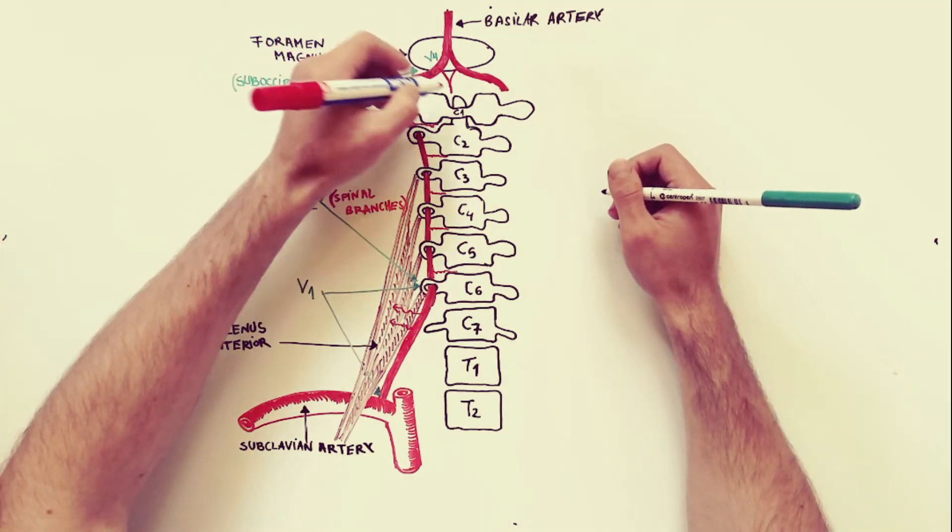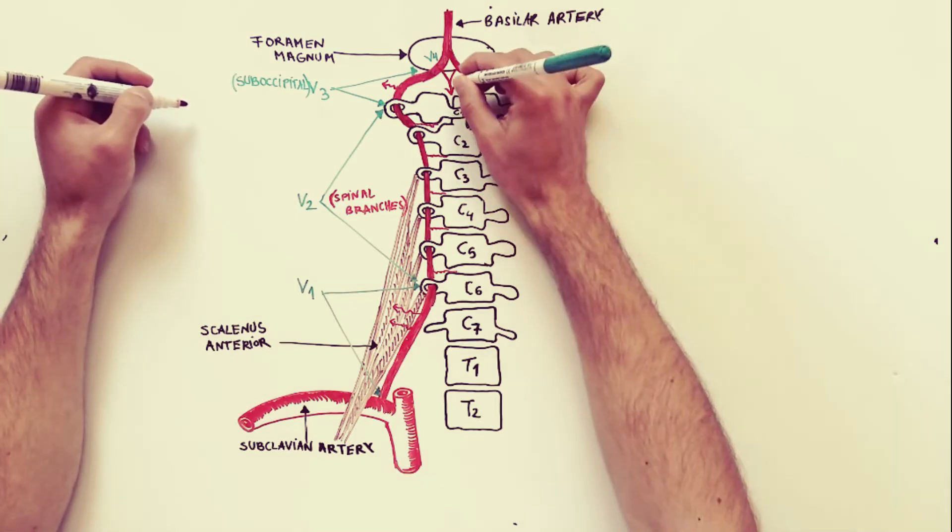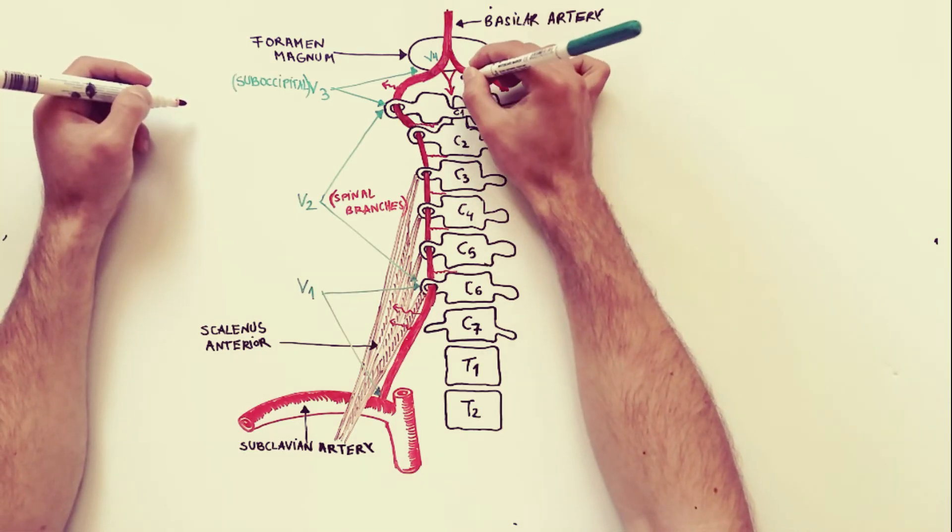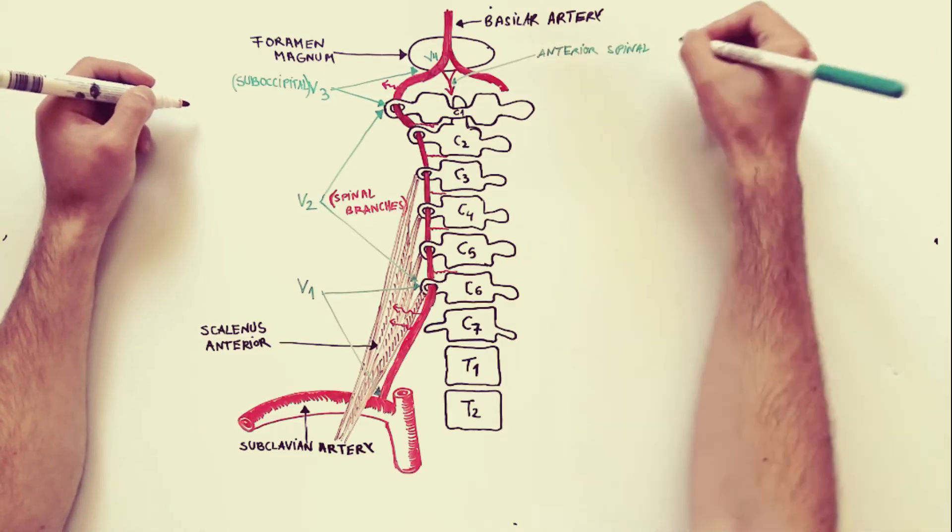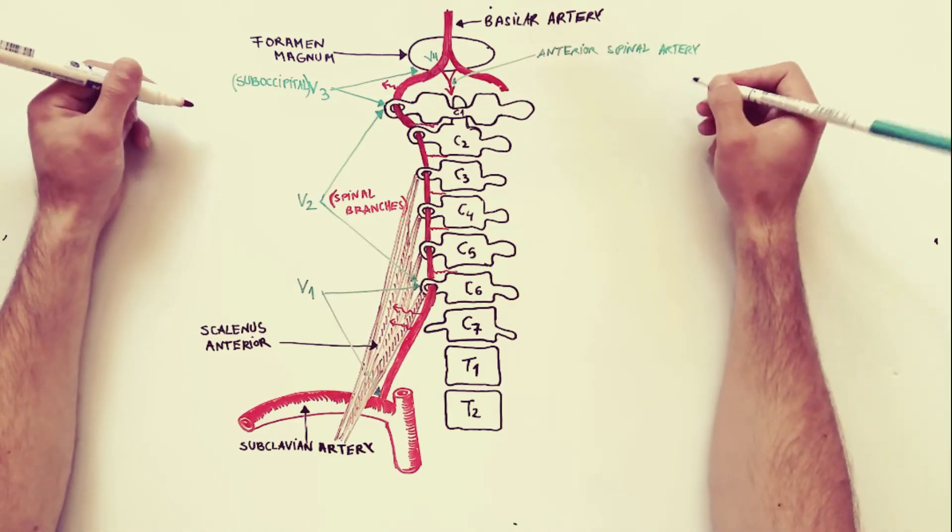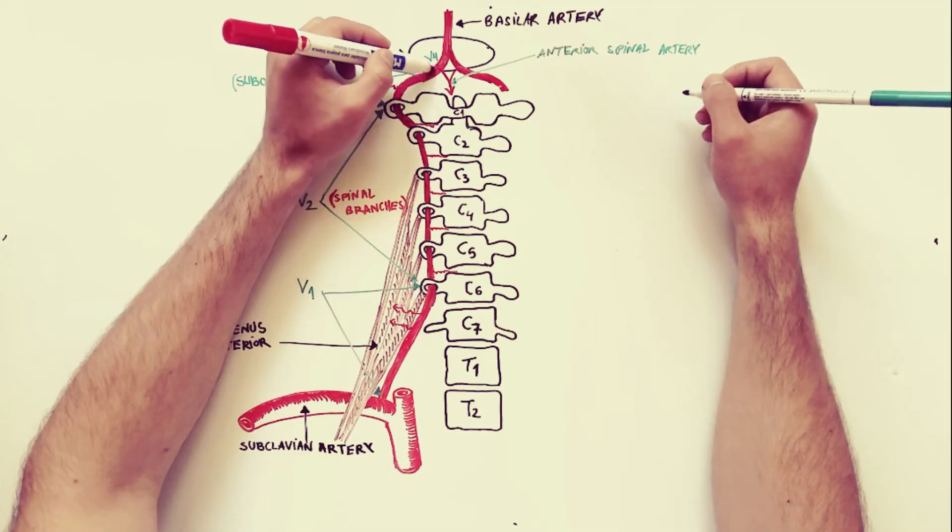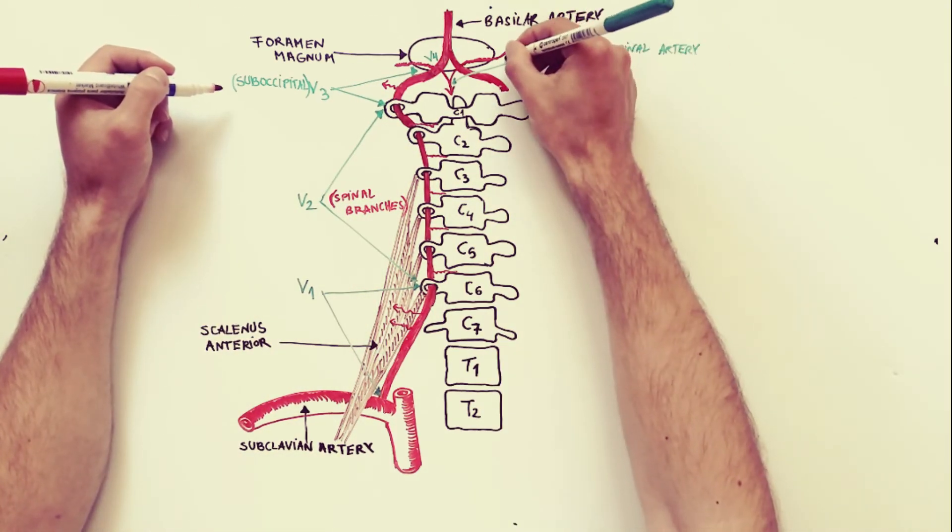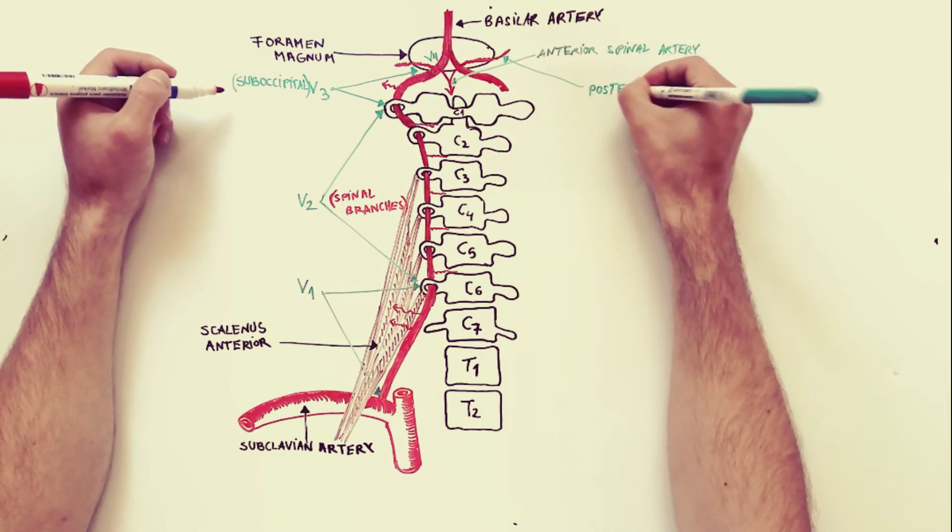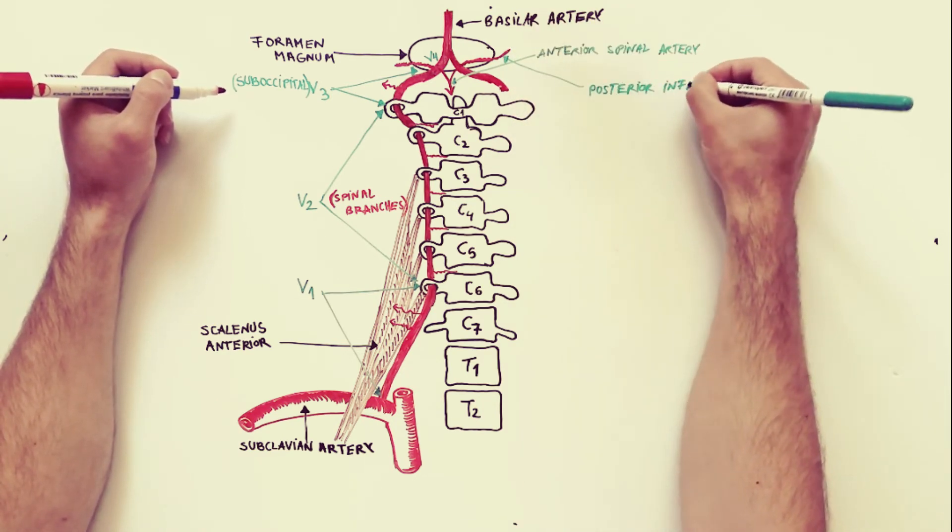The cranial branches arise from the fourth part of the vertebral artery, and these are the anterior spinal artery, in which formation contributes both vertebral arteries. The posterior inferior cerebellar artery originates from the cranial part of the vertebral artery.